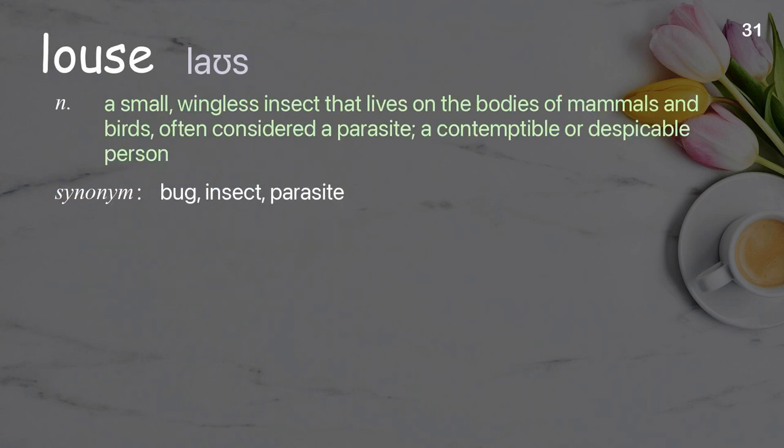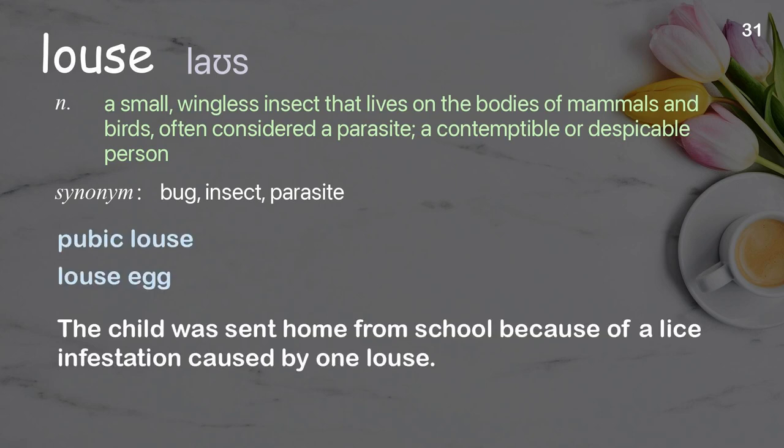Louse: a small, wingless insect that lives on the bodies of mammals and birds, often considered a parasite; also a contemptible or despicable person. Examples: pubic louse, louse egg. The child was sent home from school because of a lice infestation caused by one louse.